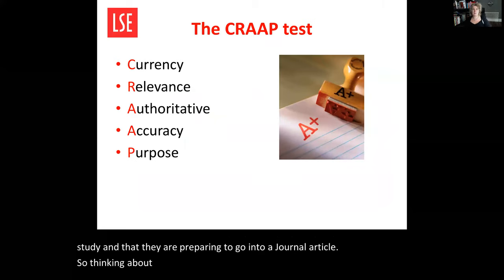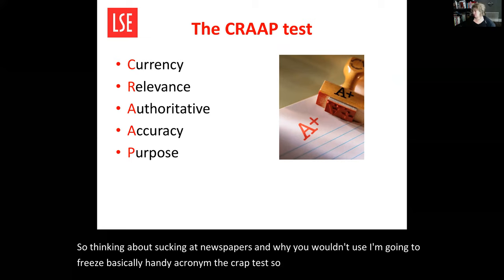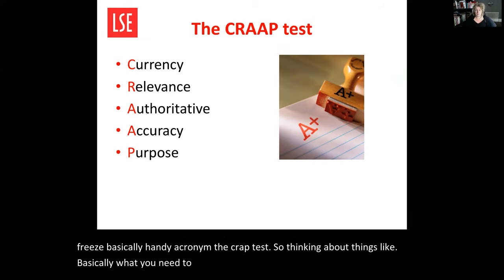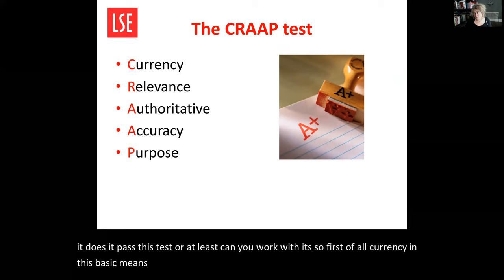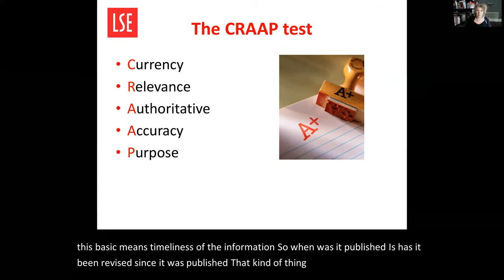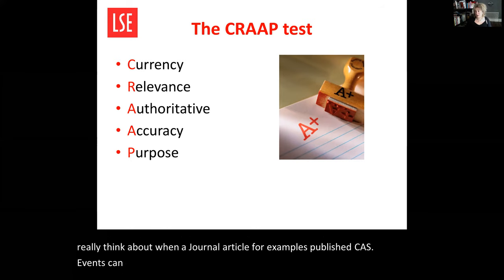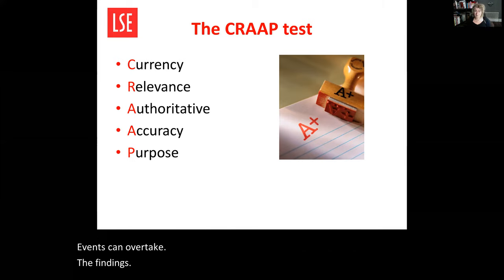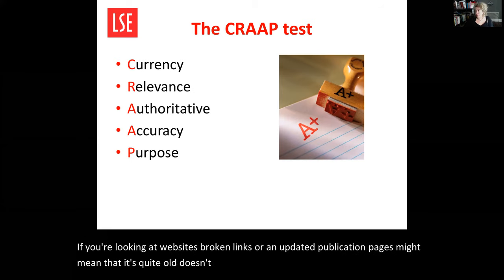Now the CRAP test — a handy acronym for evaluating your resources. First, Currency: the timeliness of the information. When was it published? Has it been revised since publication? Particularly if you're working on a science EPQ, or something on sociology or politics, you need to think carefully about when a journal article was published because events can overtake the findings. Broken links or unupdated website pages might also indicate something is quite old.